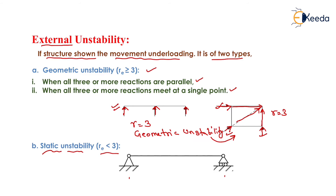The second type is static instability. A beam subjected to vertical loading only will develop only vertical reactions. In this case, the number of reactions equals two, which is less than three — and that is why it is a case of static instability.